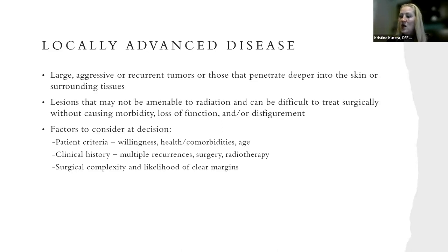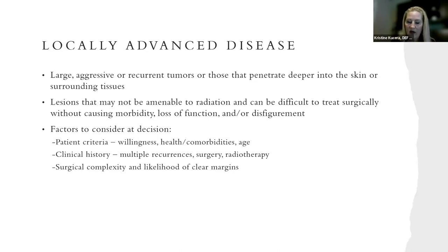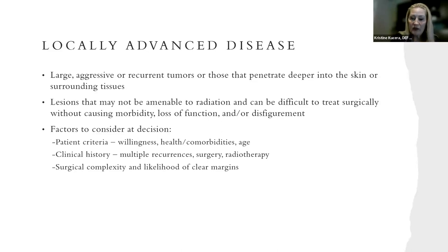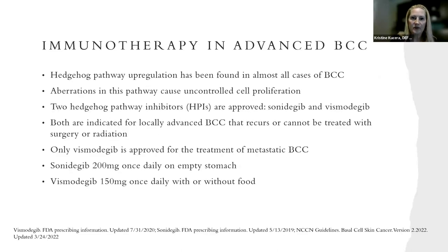You also have to consider if it's the site of previous treatment. Subtypes matter as well, since some have aggressive growth patterns — basal squamous, infiltrative, sclerosing or morpheaform, and micronodular tend to be more aggressive. These are the things you need to keep in mind when reading the pathology for a possible recurrence.